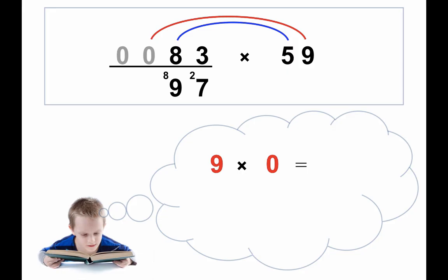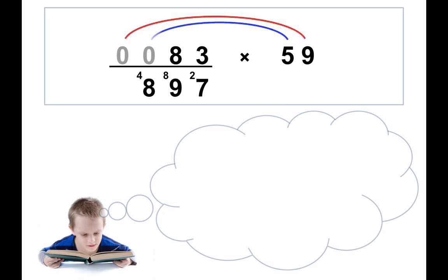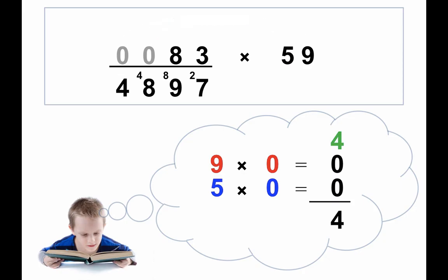Go to the next step. 9 times 0 is 0, so we can ignore that. We have the carry, so we write down the answer. And there's our answer, 4,897. Very simple. We just write the answer down in one line.